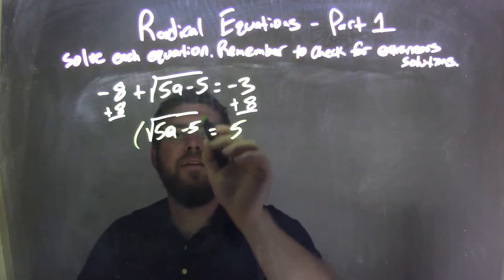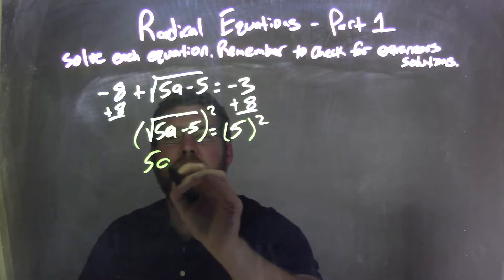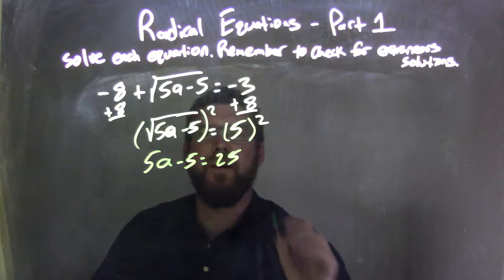I then square both sides of the equation, leaving me with 5a minus 5 on the left equals 5 squared, which is 25. A lot of 5s here.